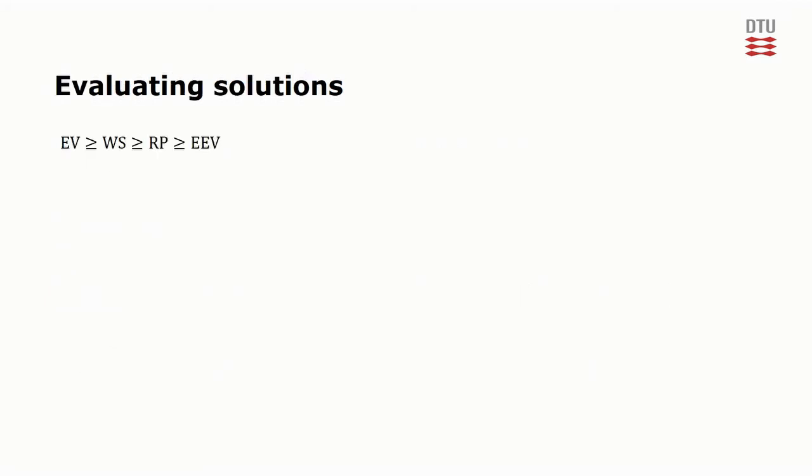We can now write up this relation between the optimal objective values of the four problems. EV is greater than or equal to WS, which is greater than or equal to RP, which is then greater than or equal to EEV. An intuition behind this is that EV is cheating. It is not always feasible.